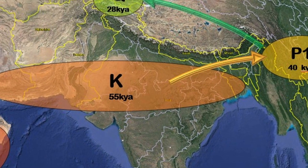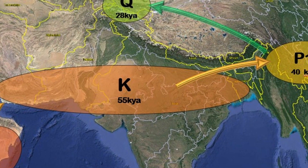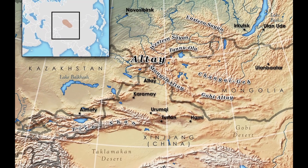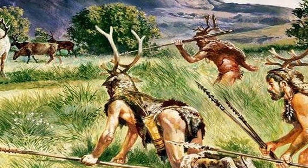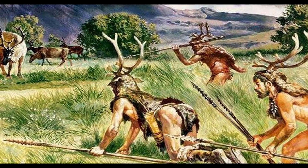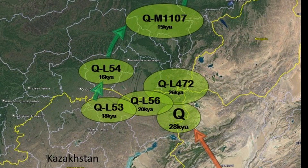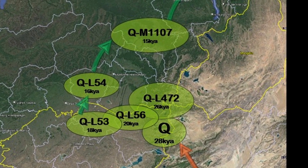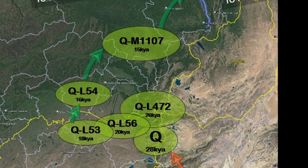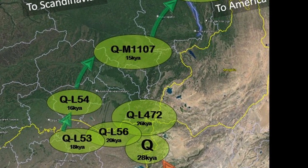The emergence of the Q haplogroup occurred approximately 28,000 years ago in the Altai mountain areas, in what is now present-day Kazakhstan along the Irtish River. The people belonging to this haplogroup were hunter-gatherers who followed reindeers and mammoths for their food. The Q haplogroup then diverged into subclades QL472, QL56, and QL53 over the next 10,000 years, all within the same region.